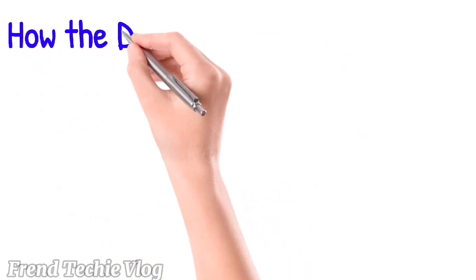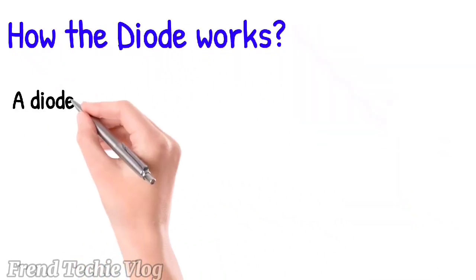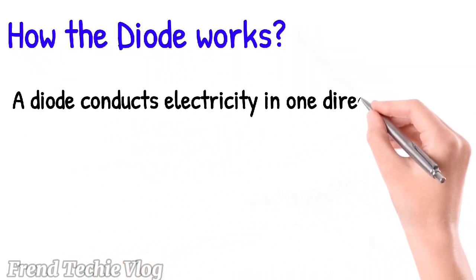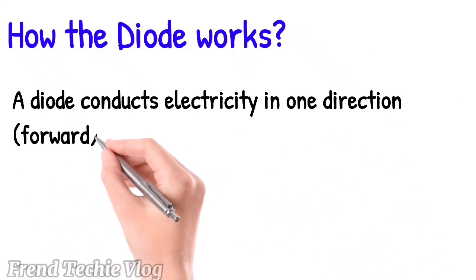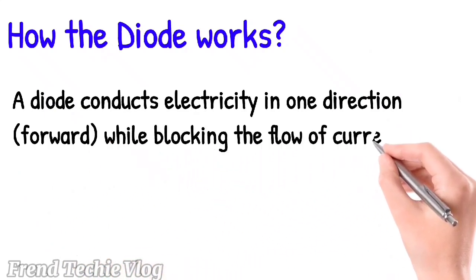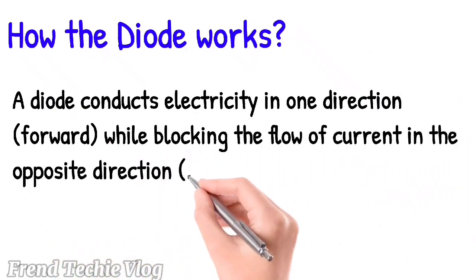How the diode works: A diode conducts electricity in one direction — forward — while blocking the flow of current in the opposite direction — reverse.